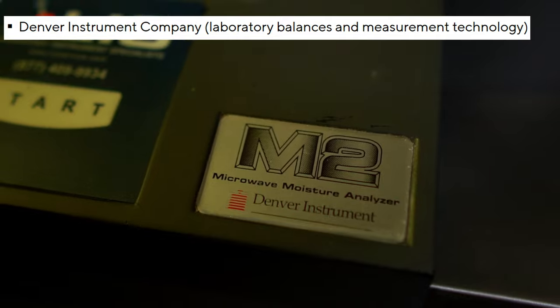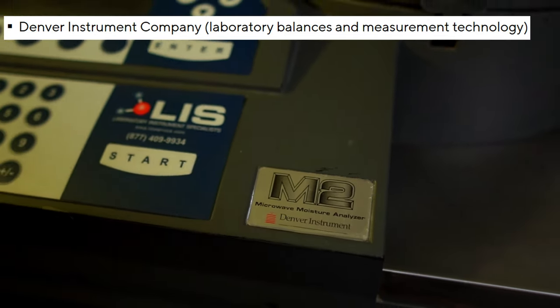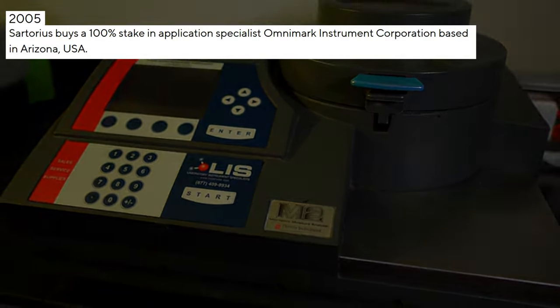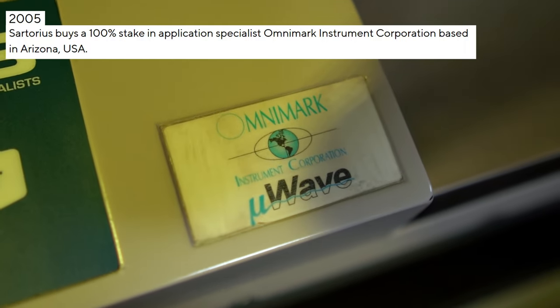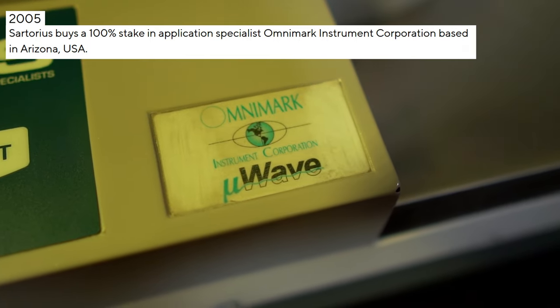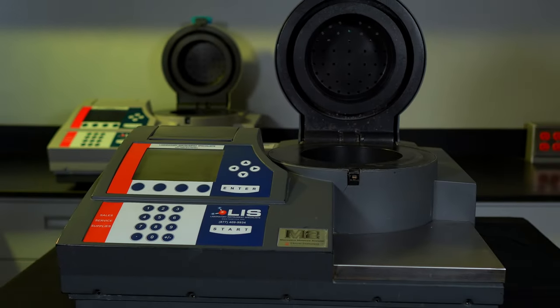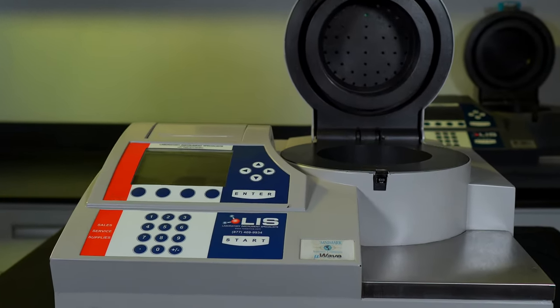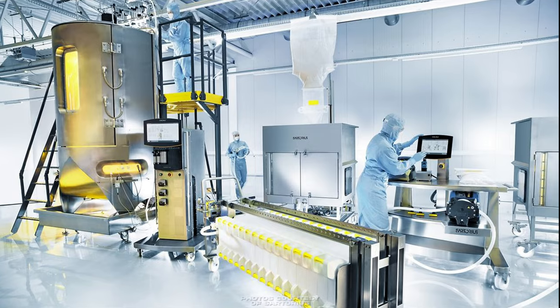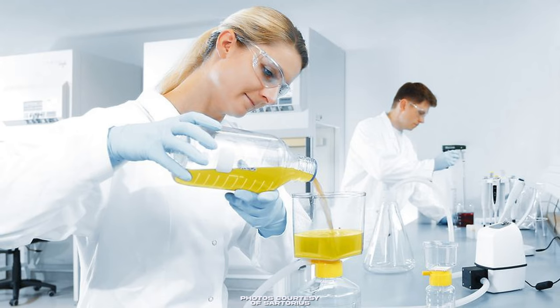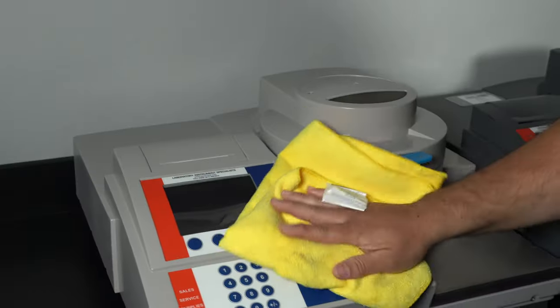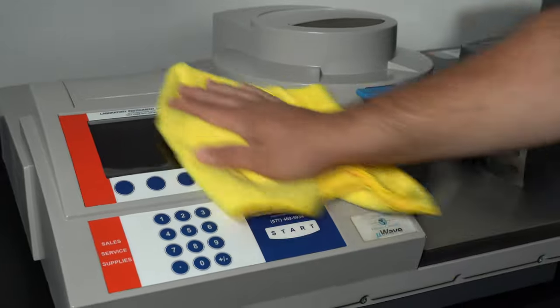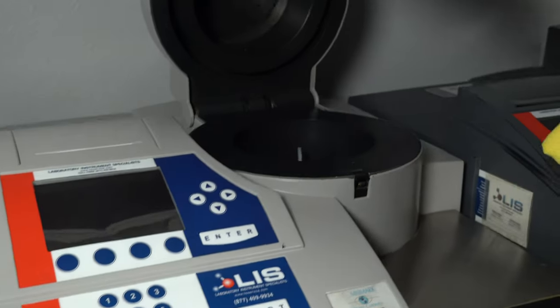In 1999, they acquired Denver Instrument Company to expand into the lab balance and measurement tech industry. In 2005, Sotorius bought a 100% stake in OmniMark Instrument Corporation. Those two company names may sound familiar, right? Well, that's because we mentioned them in the very beginning of this video. Today, they produce equipment ranging from microbiology to pharmaceuticals to water purification and laboratory equipment. That's where LIS comes into play. We service and sell these products even though they're a couple decades old.